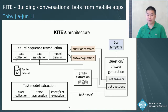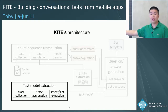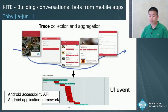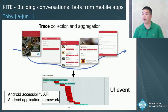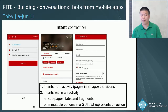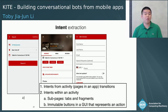This diagram illustrates the architecture of Kite at a high level. Kite will first extract the task model through a three-step pipeline that includes trace collection, trace aggregation, and intent-slot extraction. For collecting a complete UI and usage trace from Android apps, Kite instruments those apps through the Android accessibility API and the Android application framework — a method that does not require any modification to the apps. After collecting and aggregating the traces, Kite will extract intents from them. We consider a transition from one activity to another to be an intent, because that's how most mobile apps are organized, where each activity represents one action the user can do.